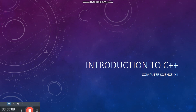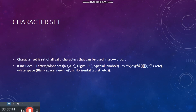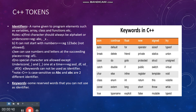Now that we have completed installing the C++ software, we will proceed to the introduction of C++. First, we will see about the character set. A character set is a set of varied characters that can be used in a C++ program. The valid characters are letters, digits, and special symbols. White spaces are also included as special characters.